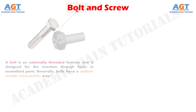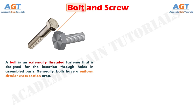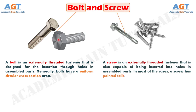A bolt is an externally threaded fastener that is designed for insertion through holes in assembled parts. Generally, bolts have a uniform circular cross-section area. On the other hand, a screw is an externally threaded fastener that is also capable of being inserted into holes in assembled parts, but in most cases a screw has pointed tails.